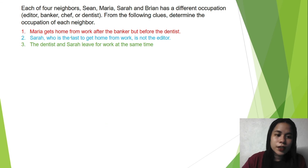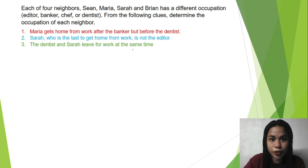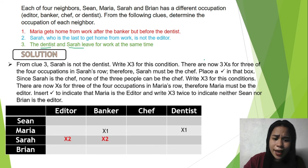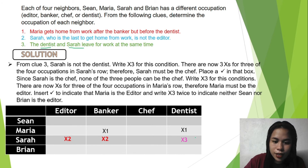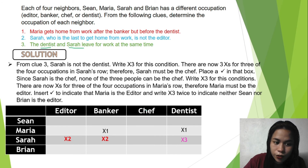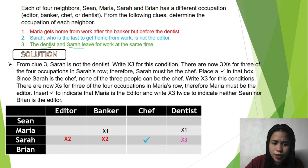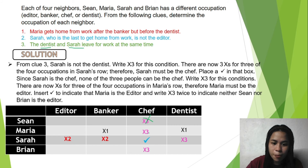From Clue 3: The dentist and Sarah leave for work at the same time, meaning Sarah is not the dentist. We write X3 under the dentist column of Sarah's row. Since Sarah now has three occupations ruled out — editor, banker, and dentist — we can conclude that the occupation of Sarah is chef. We write a check mark under the chef column of Sarah's row. Since Sarah is the chef, Sean, Maria, and Brian cannot be the chef, so we write X3 under the chef column for each of them.